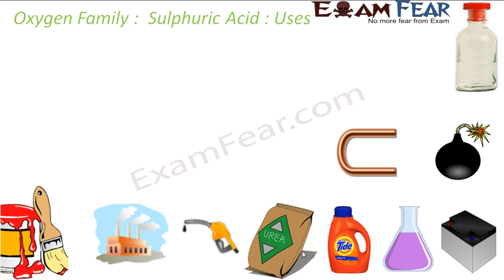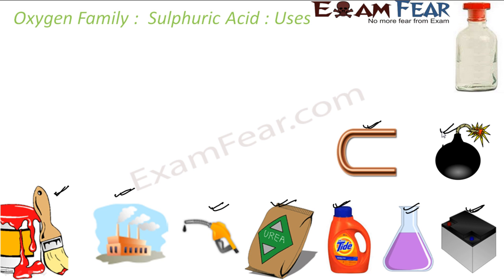Now let's see the uses of sulfuric acid. Sulfuric acid is called the king of all chemicals and has very important uses in industry. It is used to manufacture fertilizers, in petroleum refining, to make dyes and paints, detergents, in metallurgical applications, to make storage batteries, in laboratories, and for explosives.